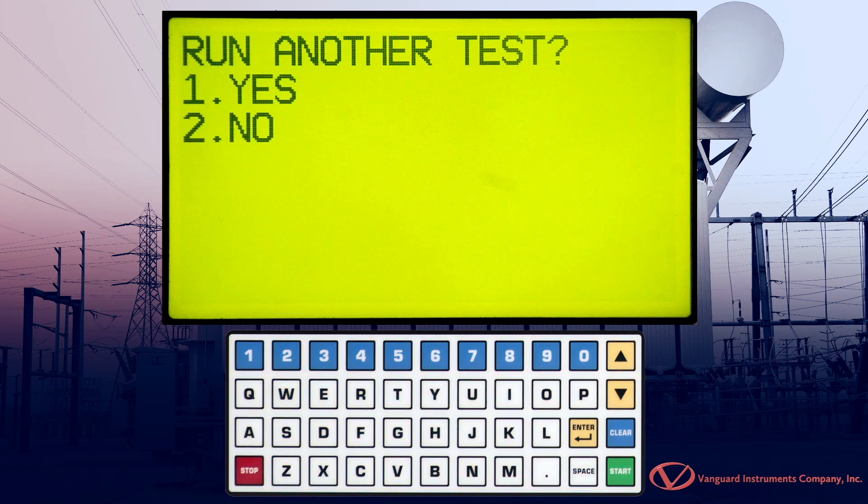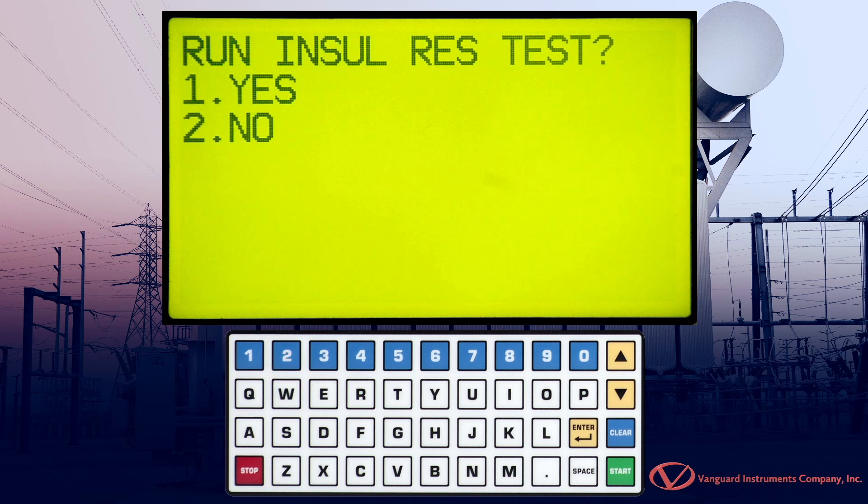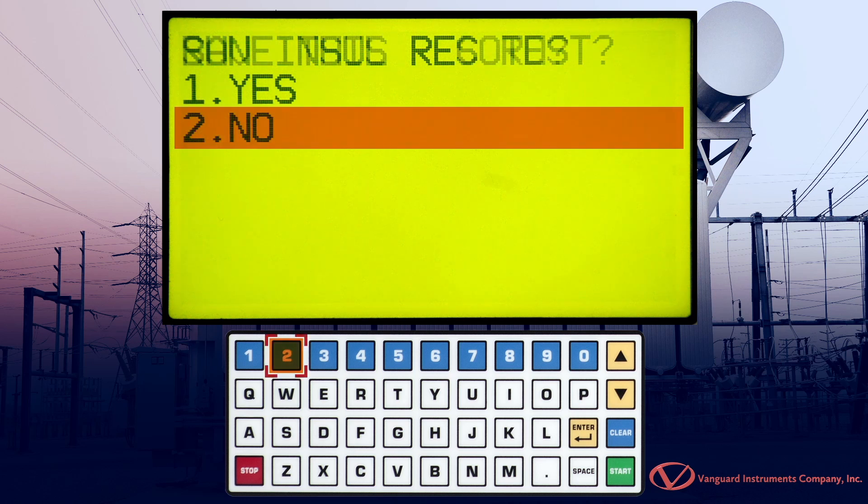You can run another test with the same test parameters by pressing 1 but for this example, we'll press 2 for No. You can also run a burden test by pressing 1 but for this example, we'll press 2 for No. Now, we're given the option to run an insulation resistance test. We'll press 2 for No.